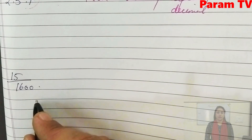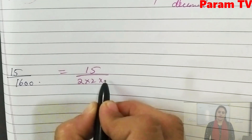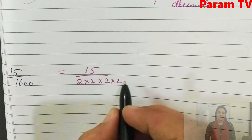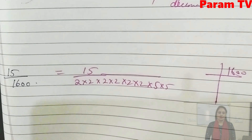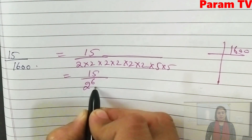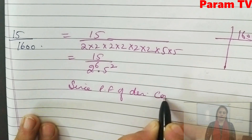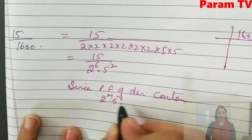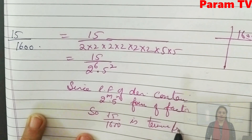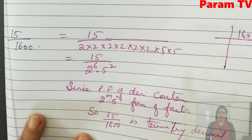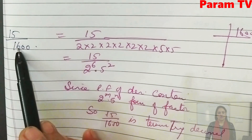Next is 15/1600. Now, 1600 — you can find its prime factors. 1600 = 2 × 2 × 2 × 2 × 2 × 2 × 5 × 5, which is 2⁶ × 5². So 15/1600 = 15/(2⁶ × 5²). Since the prime factorization of the denominator contains only 2^m × 5^n form, 15/1600 is a terminating decimal. Without performing the division, you can check by making prime factors of the denominator.